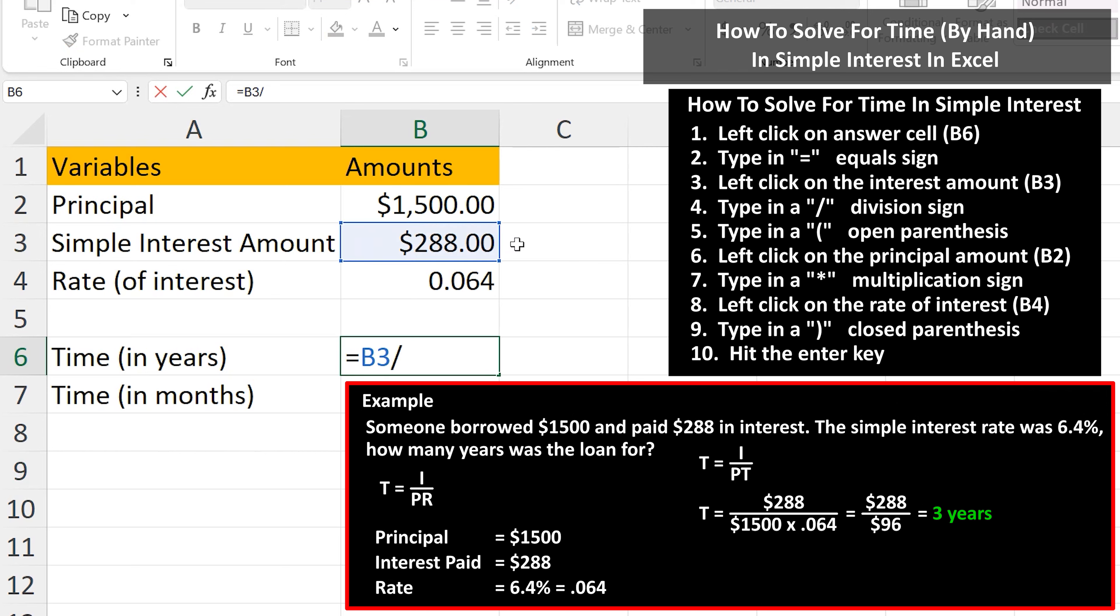And then we type in a division sign, which is a forward slash in Excel. Next, we type in an open parenthesis, and then we need to left click on the principal amount, cell B2.